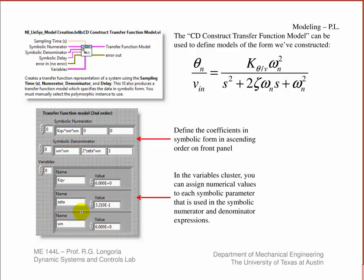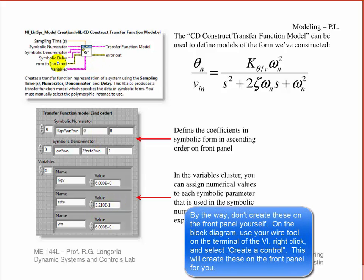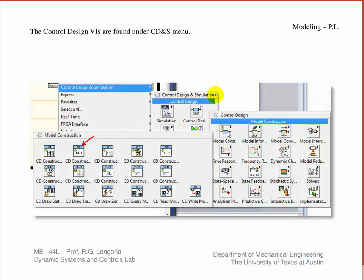You can have this other cluster that you can create on your block diagram. Here's where you can define the parameters that you use to define these terms and the associated numerical values. It's a really nice way of building that transfer function model. The menu path, you go to Control Design Simulation. I'm going to give you the VI, but I'm going to put gaps in it. You go down Control Design, and under Model Construction, you can pop up and here's the CD Construct Transfer Function VI.